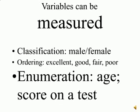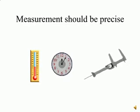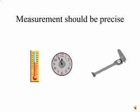Perhaps the most precise way in which variables can be measured is by enumeration — an actual numerical value, such as age 59 to describe a person's age, or a specific score on a test like 76 out of 100. The more precise the measurement can be, the better the measurement.